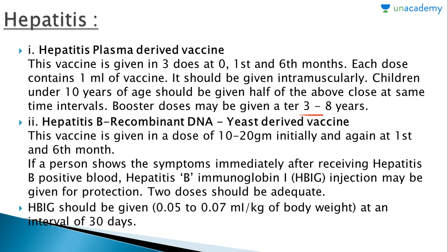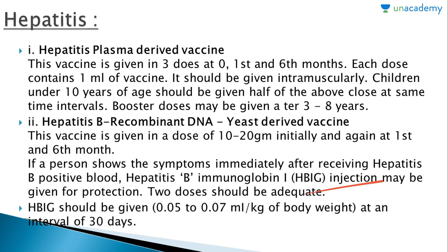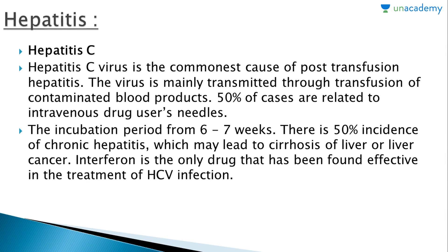Booster doses may be given at a time interval of about three to eight years. The hepatitis B recombinant DNA yeast-derived vaccine is given in a dose of 10 to 20 micrograms initially and again at the first and sixth month. If a person shows symptoms immediately after receiving hepatitis B positive blood, hepatitis B immunoglobulin (HBIG) injection may be given for protection. Two doses should be adequate, given at an interval of 30 days.